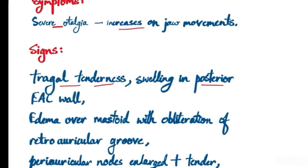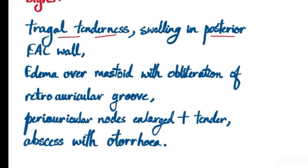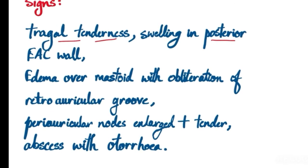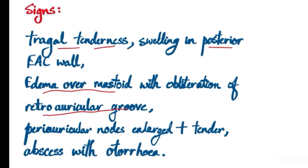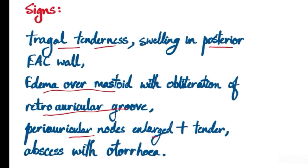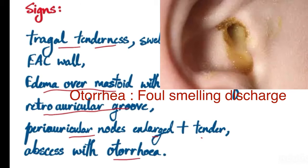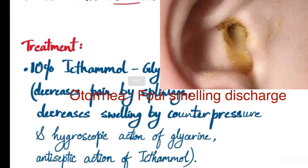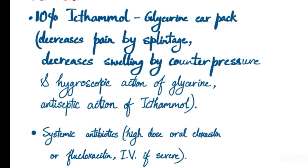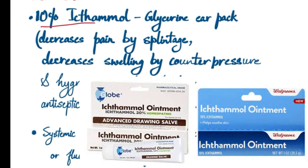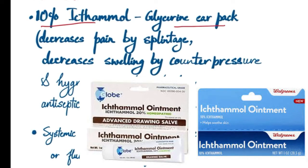Signs include tragal tenderness and swelling in the posterior external auditory canal wall. There is swelling and edema over the mastoid with obliteration of the retroauricular groove. Periauricular nodes are enlarged and tender, and there may be an abscess with otorrhea.